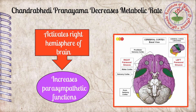Each cerebral hemisphere is connected closely to one branch of the autonomic nervous system. The left hemisphere is coupled to the sympathetic branch and the right to the parasympathetic branch. Due to parasympathetic dominance on the right nostril, blood vessels relax. Therefore, inhalation through only the left nostril leads to increased blood flow associated with increased electrical activity in the right hemisphere, resulting in parasympathetic excitation.